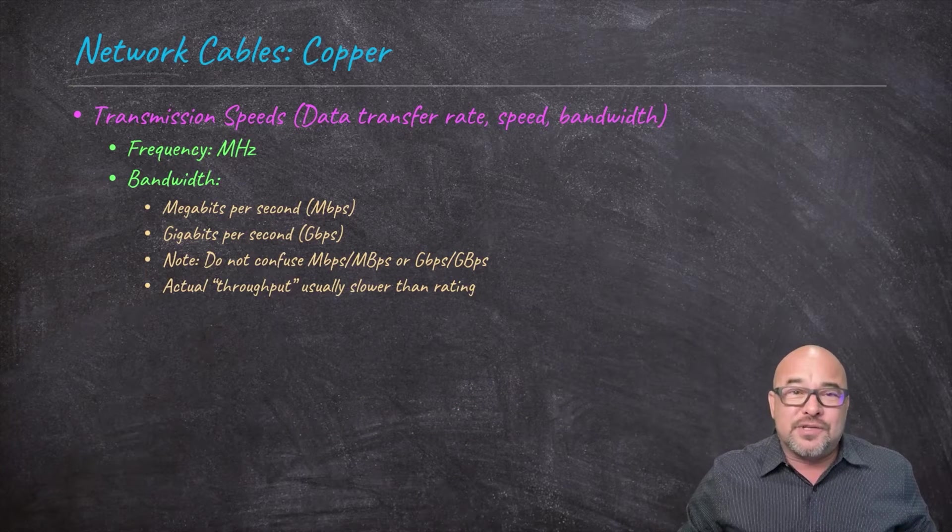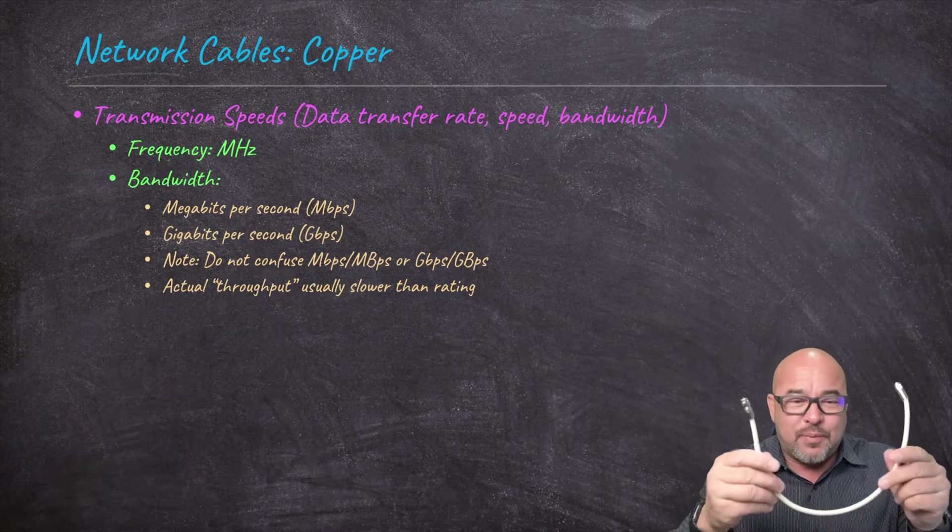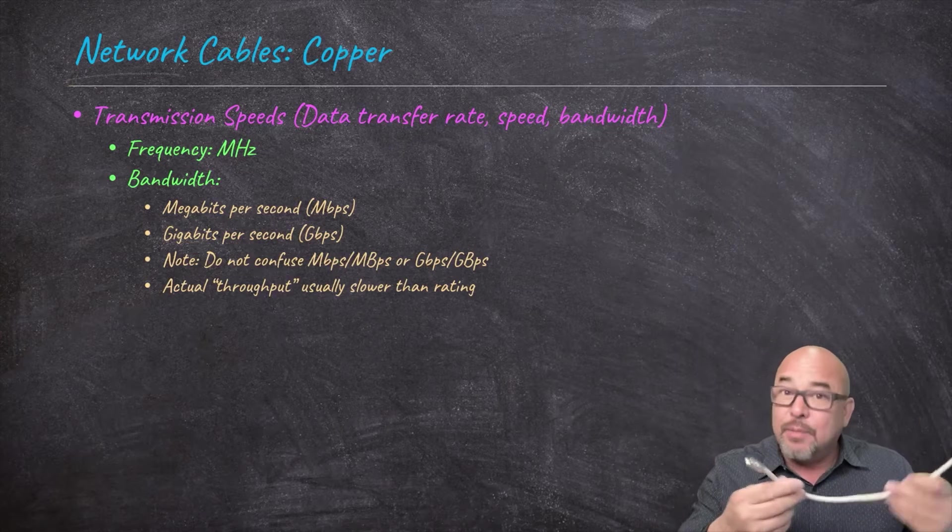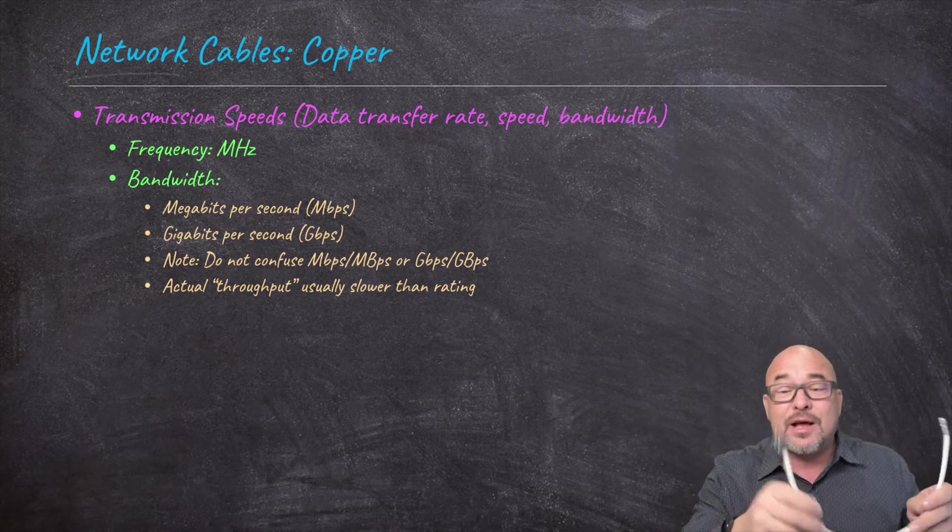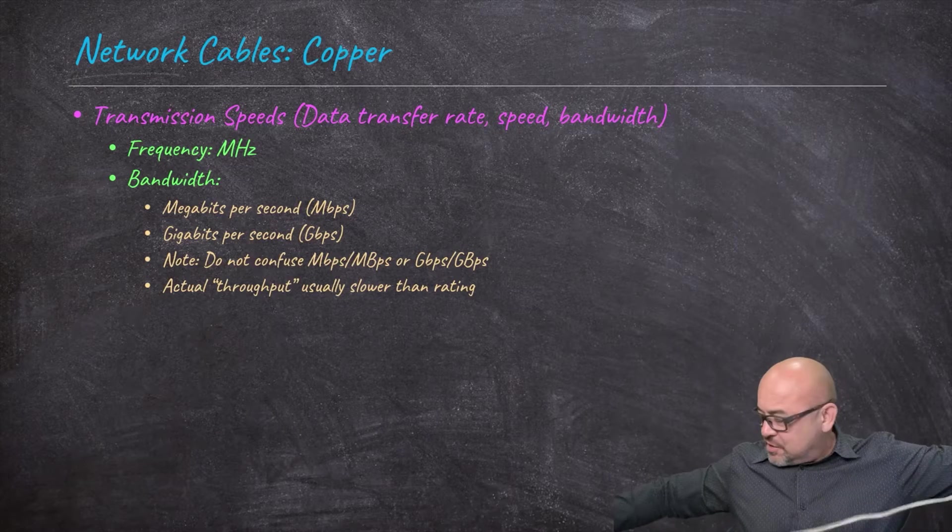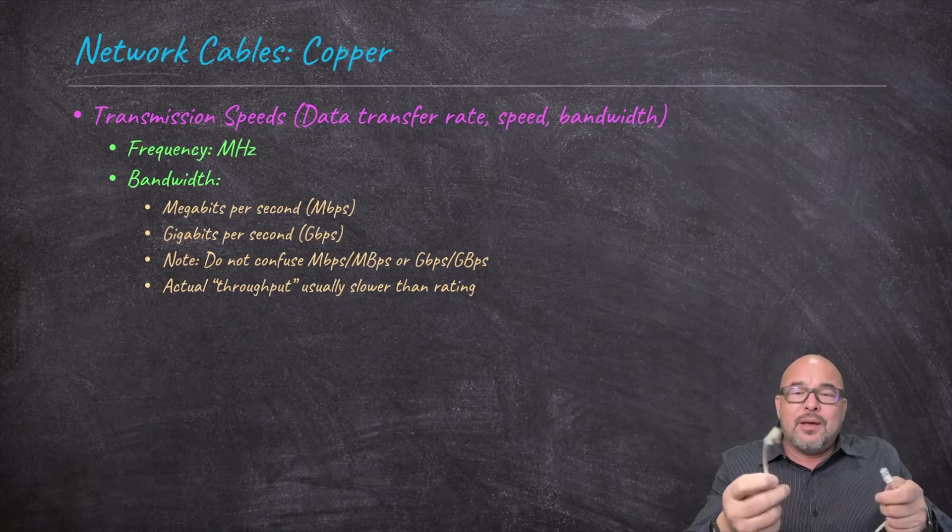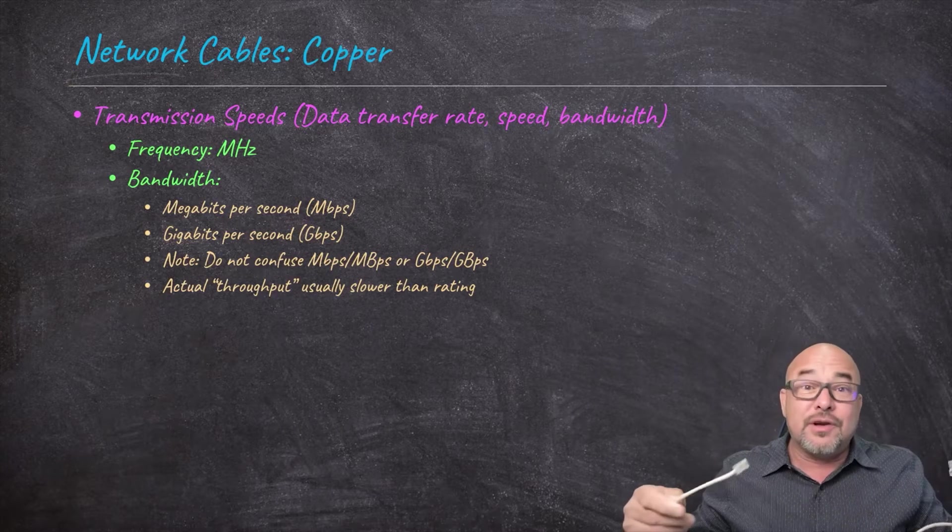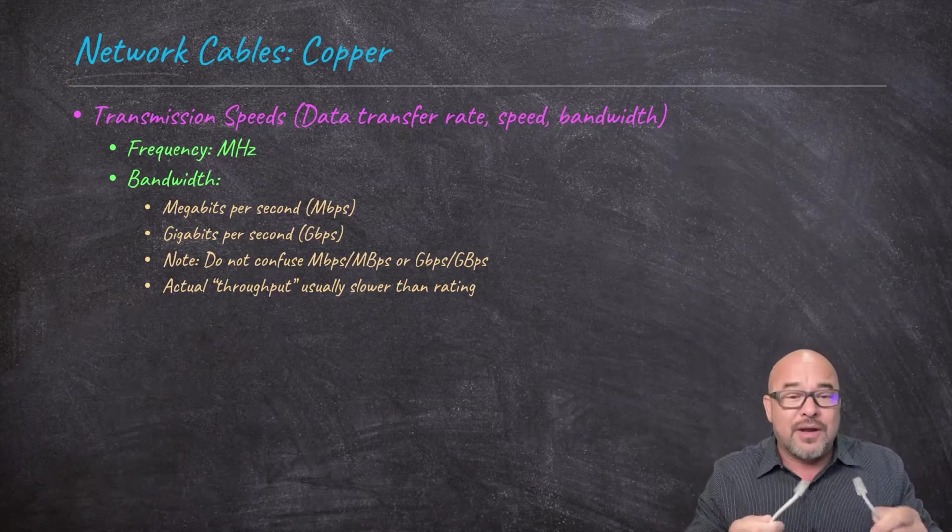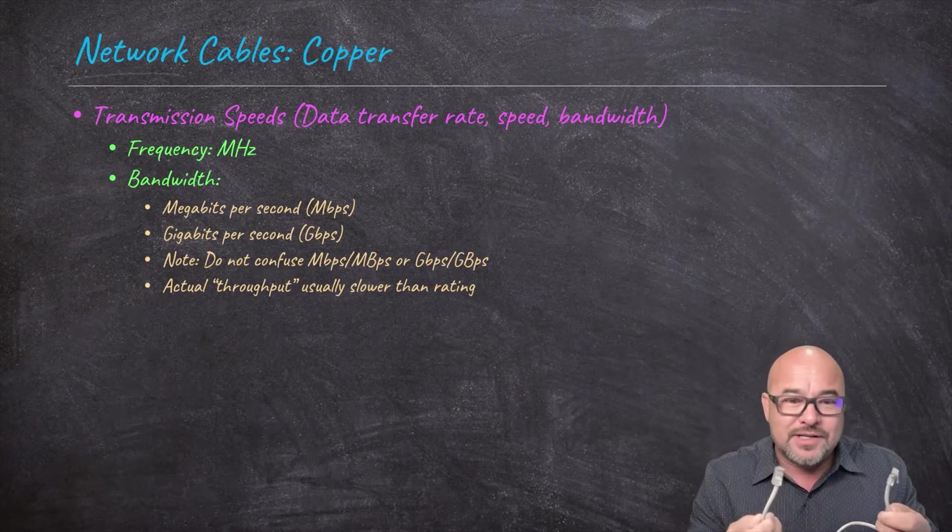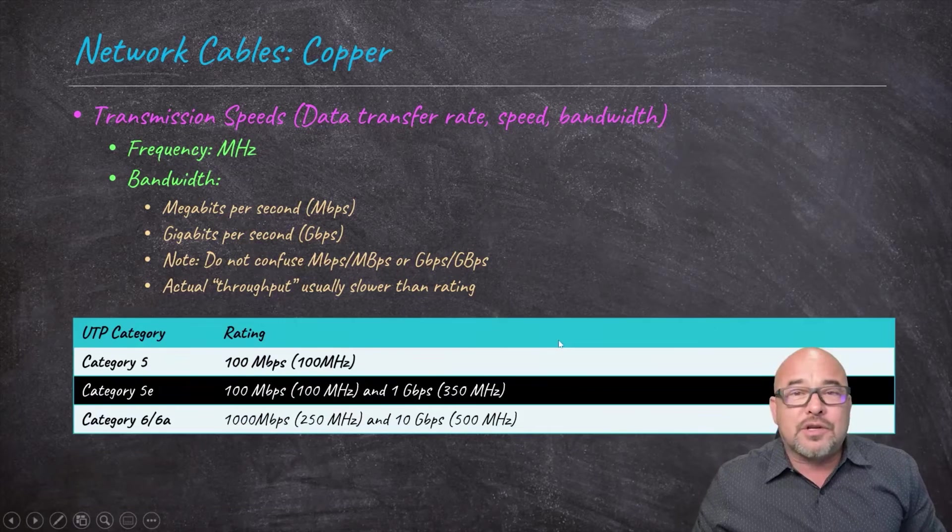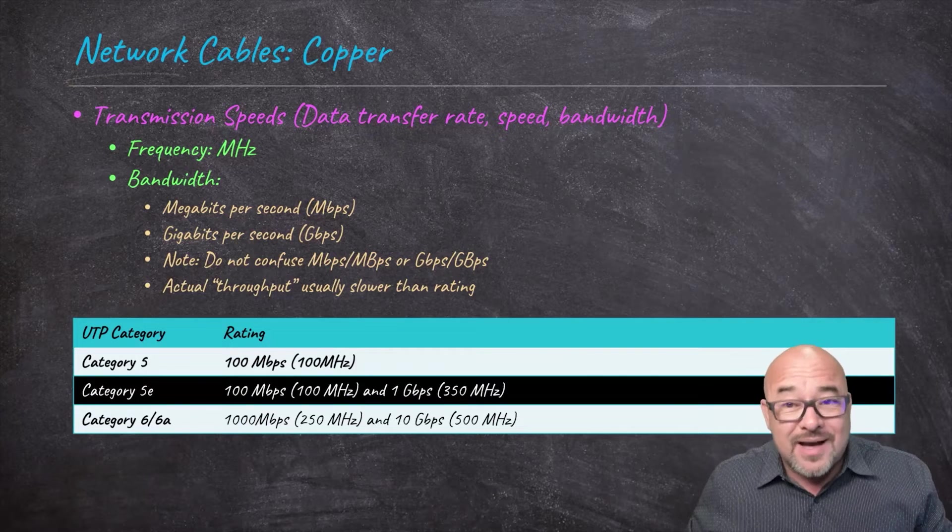Do not confuse megabits per second, notice the lowercase b there, with megabytes per second. That's a different data rate and everything. A byte, megabyte, a byte is 8 bits. So that's a multiple of 8 there. Or gigabits per second with gigabytes per second. We're not going to go into all the details of that, but for networking discussions, it's megabits per second and gigabits per second. And again, the actual throughput that you get might be slower than advertised.